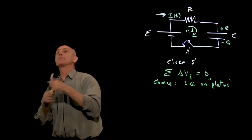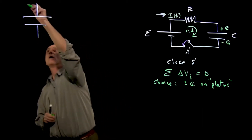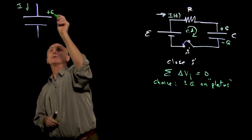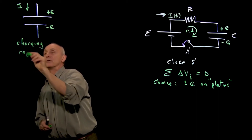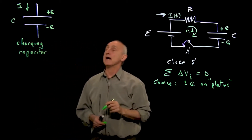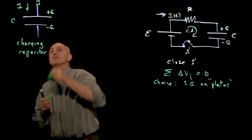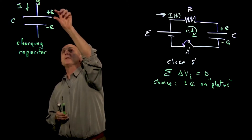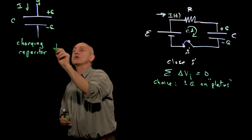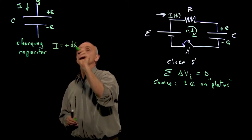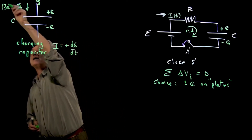Suppose we have a capacitor — this is our first case — and we have made two choices where I is coming in, and we have plus q and minus q. This is what we refer to as a charging capacitor. The charge on the plate is increasing. If we think of current as the flow of positive charges, then for our convention, when a capacitor is charging, the current is plus dq/dt. We call this convention 3a.